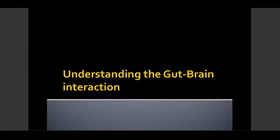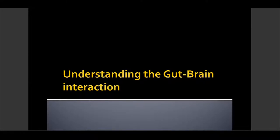First, we're going to discuss understanding the gut-brain interaction, starting with the enteric nervous system. As we know, the enteric nervous system is the intrinsic innervation of the gastrointestinal tract. It's a complex network of neurons and glial cells that is located along the GI tract.